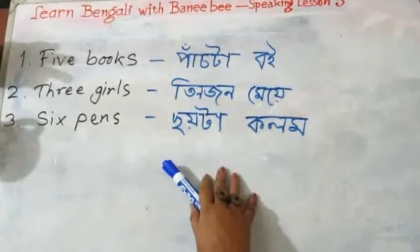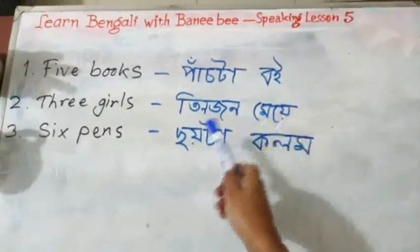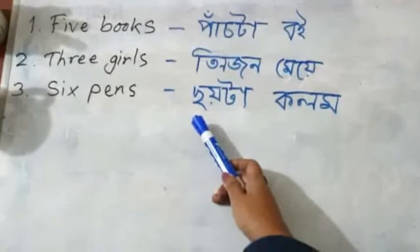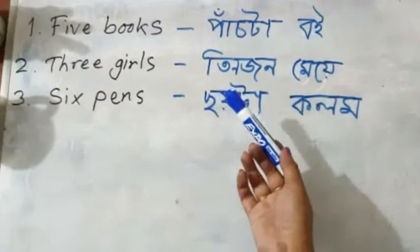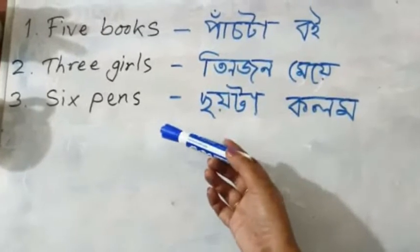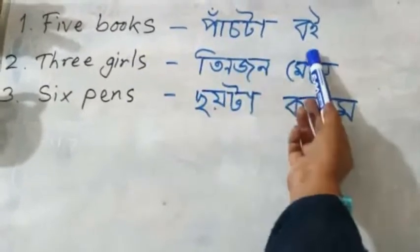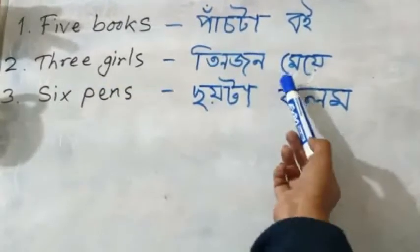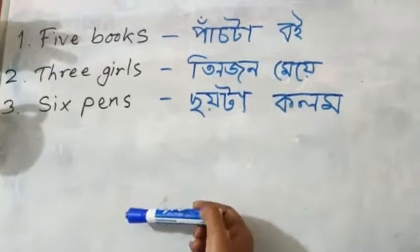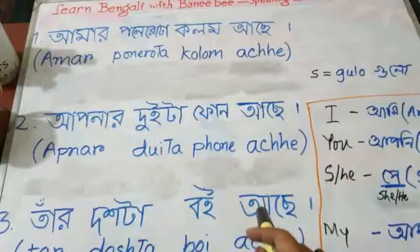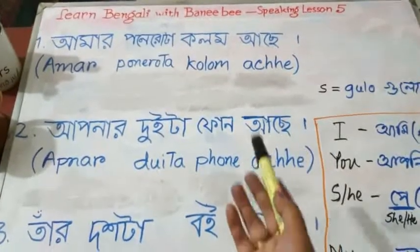Dear learners, this is Shushmita Shama from Bani B, and welcome to speaking lesson 5. Here you can see the answers — I gave you some tasks in the previous lesson, lesson 4. So here: five books, Pachita boy, three girls, pin John May, six pens. Try to recall them. Those are the answers.